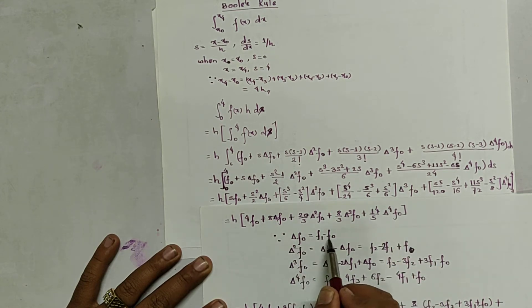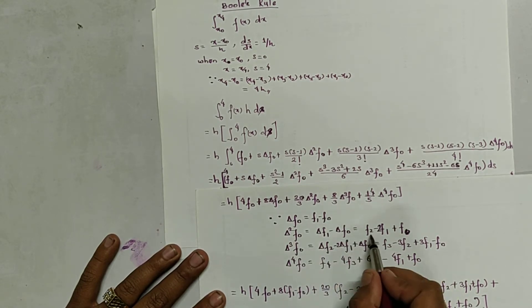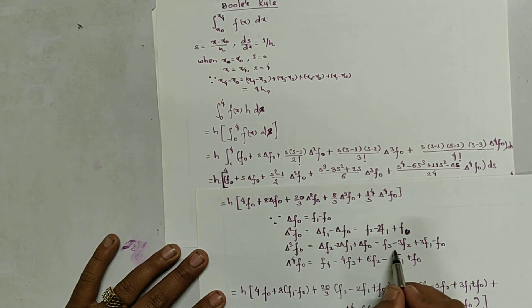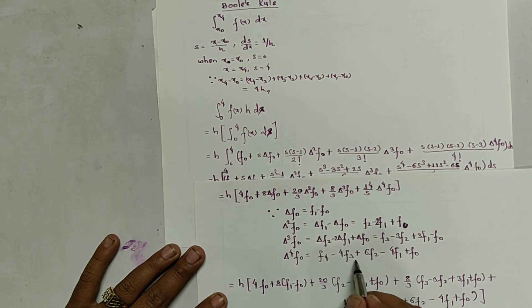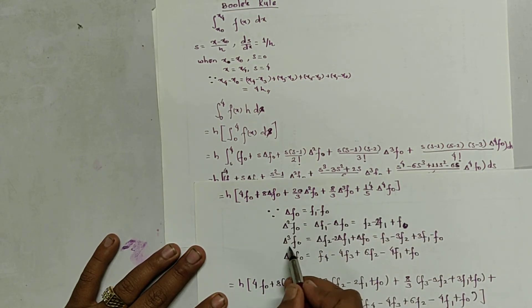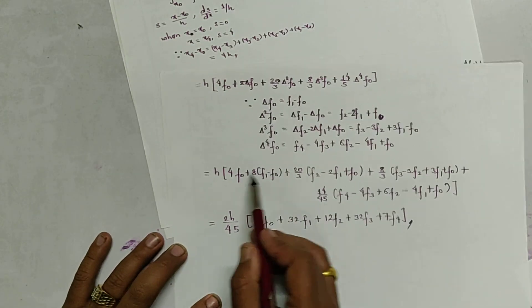We know that Δf0 = f1 − f0, and Δ²f0 = Δf1 − Δf0 = f2 − 2f1 + f0. Similarly, Δ³f0 = f3 − 3f2 + 3f1 − f0. Similarly, Δ⁴f0 = f4 − 4f3 + 6f2 − 4f1 + f0. We substitute the values of Δf0, Δ²f0, Δ³f0, and Δ⁴f0 into the expression and obtain it in this form.